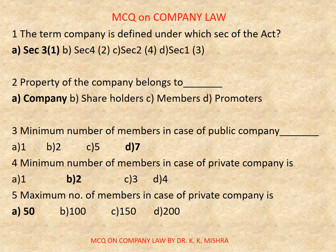Question number 4: Minimum number of members in case of a private company is — Options are: A) 1, B) 2, C) 3, D) 4. Correct option is B, 2.